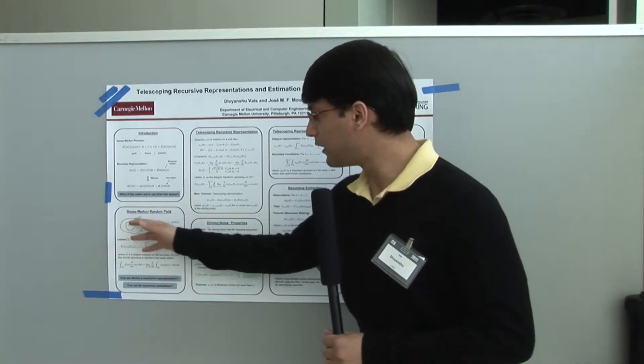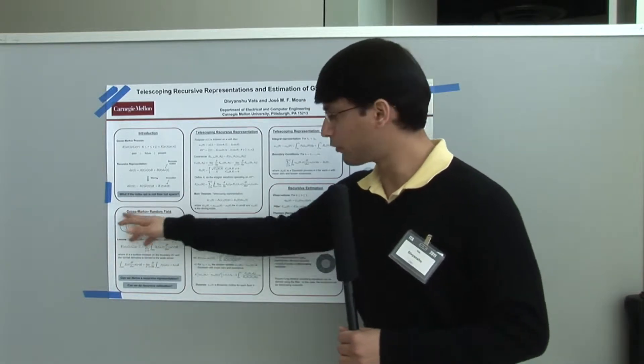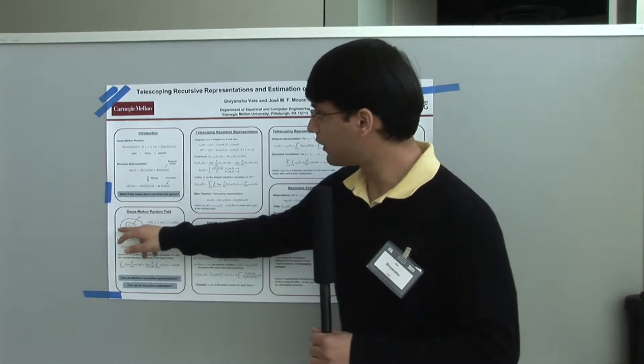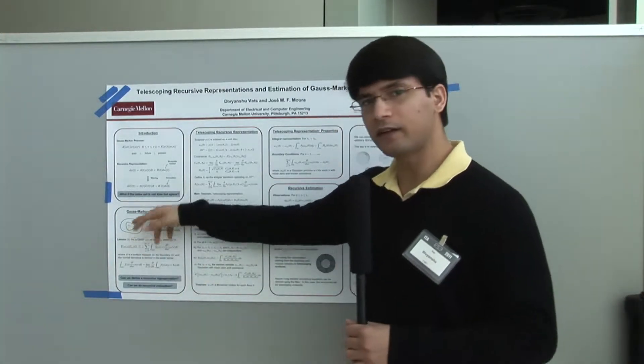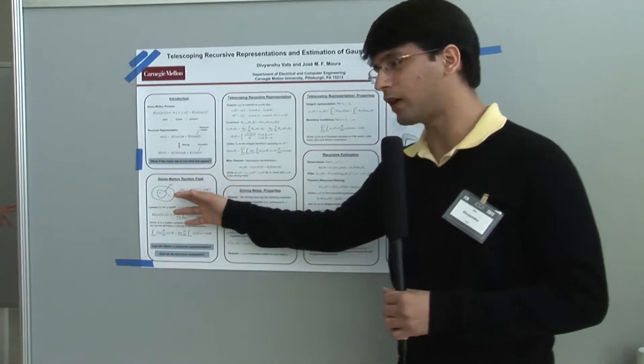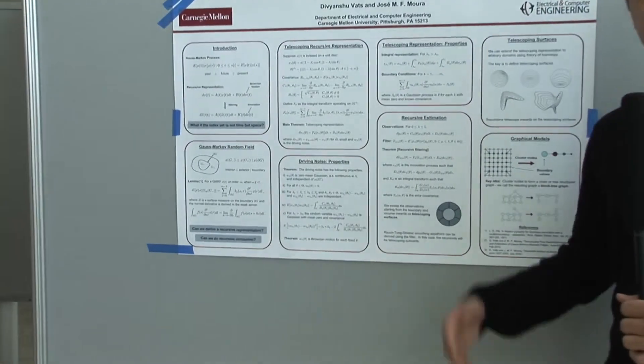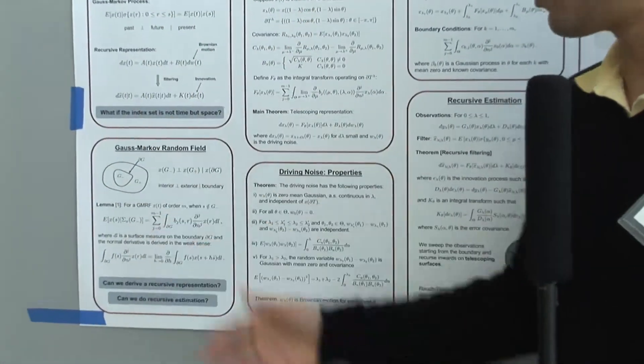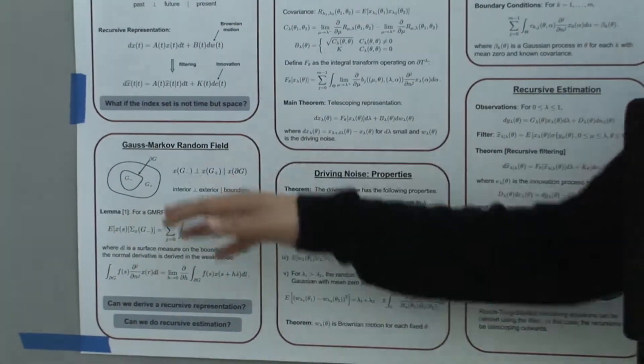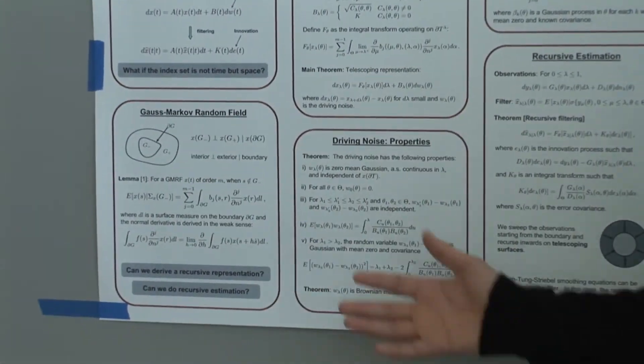says that given any random field indexed over some higher dimensional set, given any closed region G, what's defined on the inside is independent of what's defined on the outside given the boundary. This definition extends Markov random processes to Markov random fields. Now, given this definition, can we